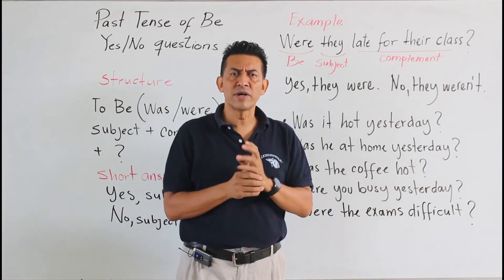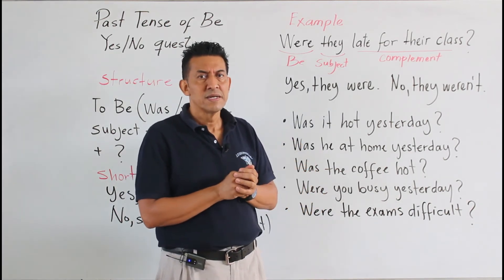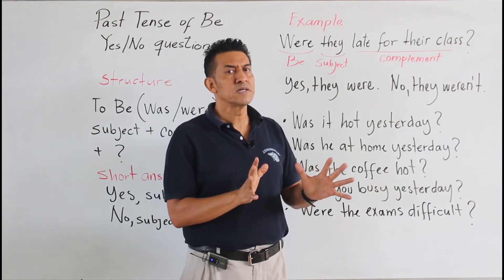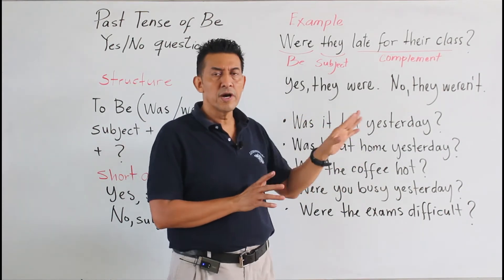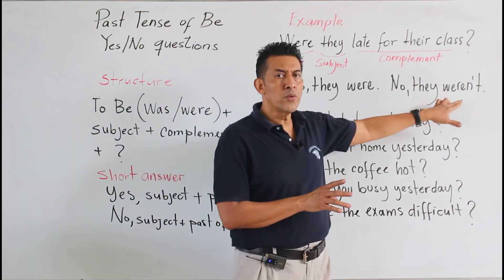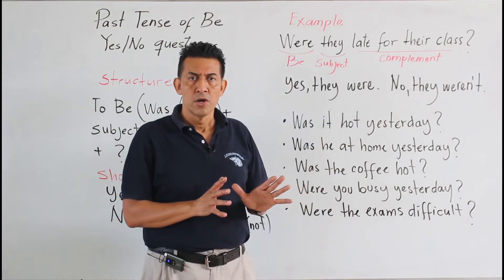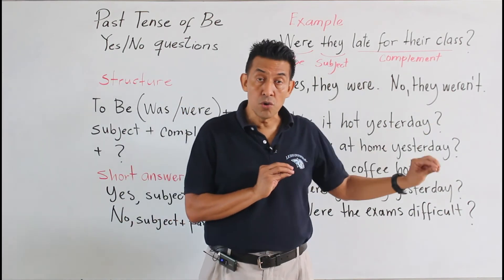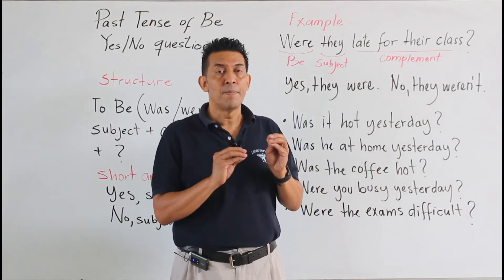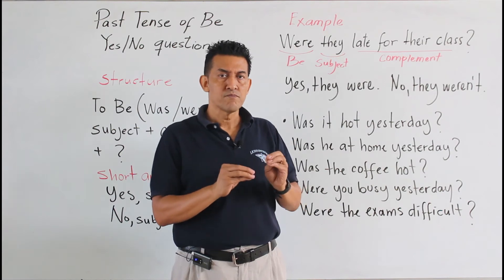Y leen: were they late for the class. Estaban ellos tarde para la clase o llegaron tarde a la clase. Y las respuestas: si es afirmativa vamos a decir yes they were. Sí, llegaron tarde. No they weren't. No, no llegaron tarde. Como pueden ver, preguntas sobre algo que sucedió utilizando el pasado del verbo to be.